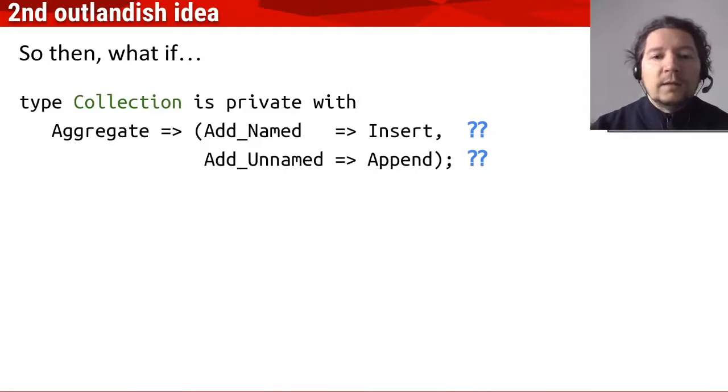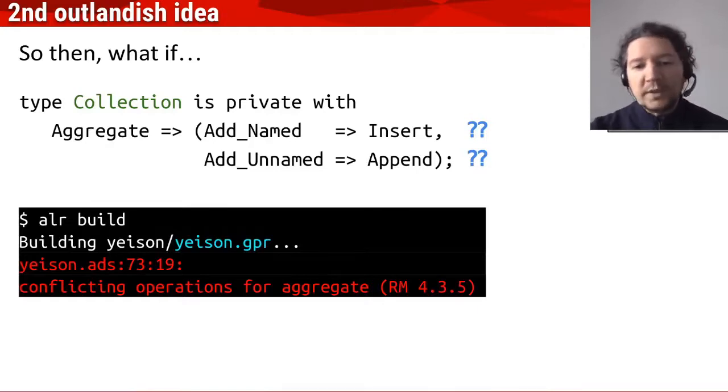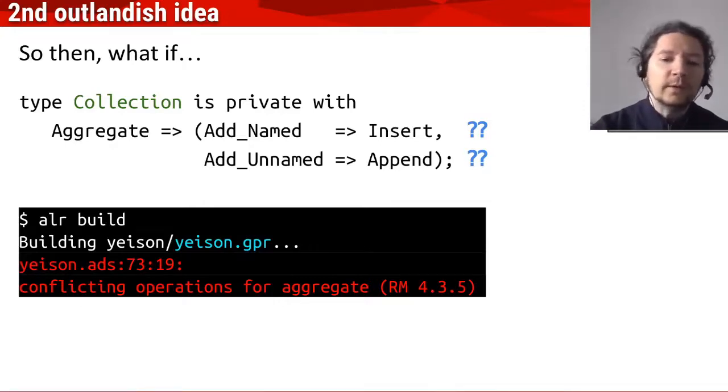Because this is rejected by the compiler with a quite precise message pointing me to the reference manual, which is something that Gnat doesn't do always. So, it's like saying, okay, now you are very wrong and the reason is here in the reference manual. So, shame on you.